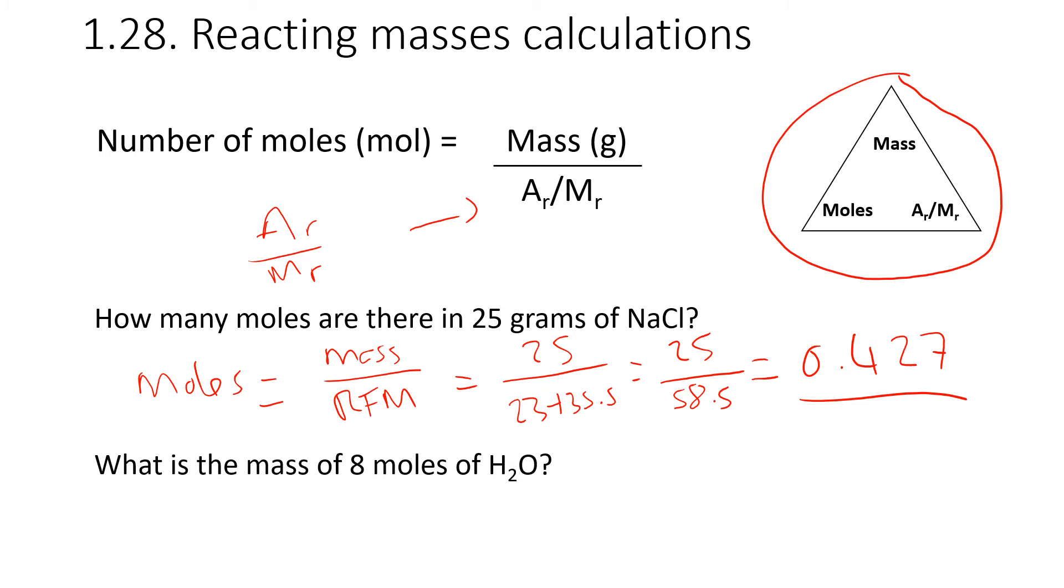What would the mass be of 8 moles of H2O? We need to calculate the mass. Mass equals moles multiplied by the relative formula mass, or the MR. I'm just more comfortable using relative formula mass and relative atomic mass, as opposed to AR and MR. But they are the same thing. The number of moles we have is 8. H2O has an MR of 18: 2 for the hydrogen, 16 for the oxygen. So 8 times 18 gives us 144.